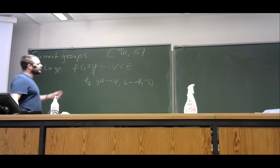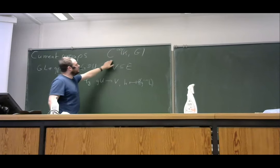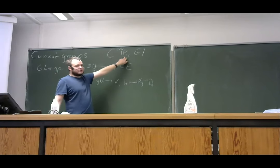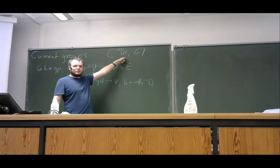These new charts we construct from the one chart are charts with respect to the original manifold structure, so we don't get a different manifold structure. This means that for a Lie group, it's more or less good enough to know a chart around the identity, and then we can push it around to get the full atlas. And this is exactly the idea for the construction of this current group.